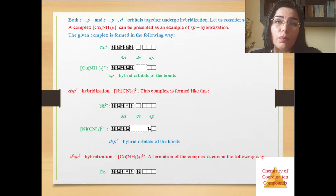A complex copper ammonia can be presented as an example of SP hybridization. The given complex is formed in the following way, like this. And SP hybrid orbitals of the bonds, you see here.